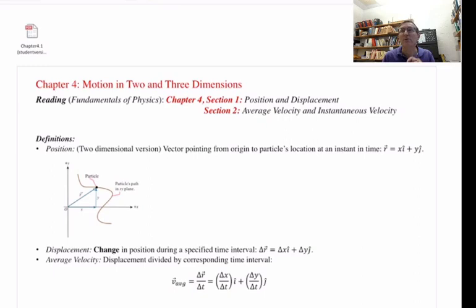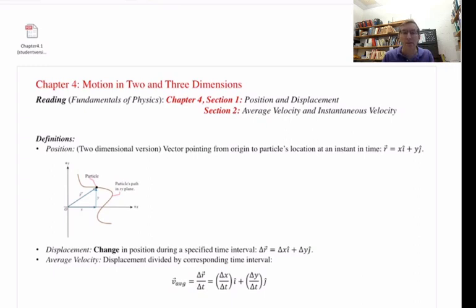To extend into two and three dimensions, we need full-blown vectors and vector algebra. Chapter 4 is really just combining Chapters 2 and 3. We're not going to define any new quantities — we'll just work with position, displacement, velocity, and acceleration — however, the math is a little more complicated because we're now looking at motion in more than one dimension.